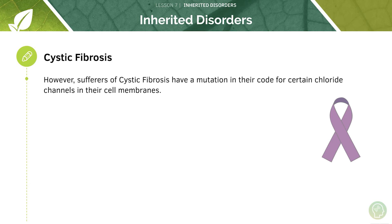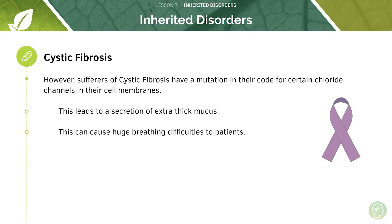Cystic fibrosis on the other hand is encoded for by a recessive allele, and this is a form of mutation in the genetic code for which certain chloride channels then dysfunction, therefore leading to slightly thicker mucus than normal in the lining of the lungs and airways. It also affects the pancreas, leading to a secretion of extra thick mucus which can cause huge breathing difficulties, because a thick layer of mucus in your airways restricts the amount of air that can pass through into your lungs. This isn't a temporary pathological presentation - it's continuously extra thick mucus in patients who suffer with this disease.